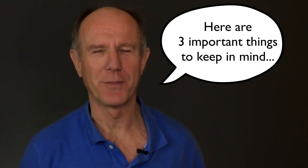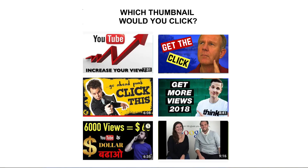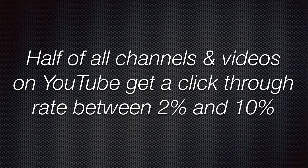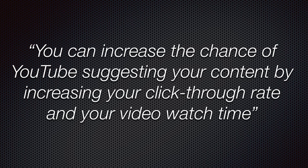Here are three important things to keep in mind. Number one, your YouTube videos are always competing with other videos on the home page, up next on the watch page, search results, and even subscription feeds. Number two, half of all channels and videos on YouTube get a click-through rate between 2% and 10%. Therefore, make sure your thumbnails stand out from your competitors' thumbnails so you can win the click. Number three, according to YouTube, you can increase the chance of YouTube suggesting your content by increasing your click-through rate and your video watch time.